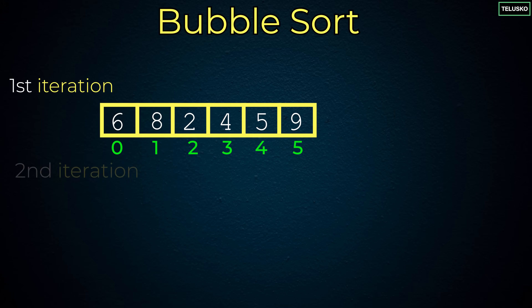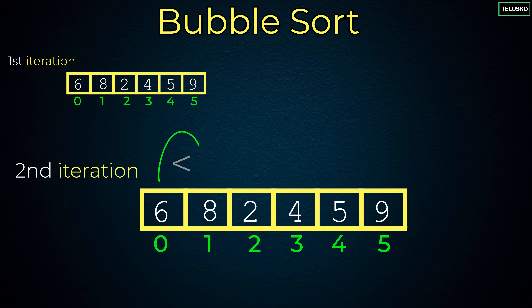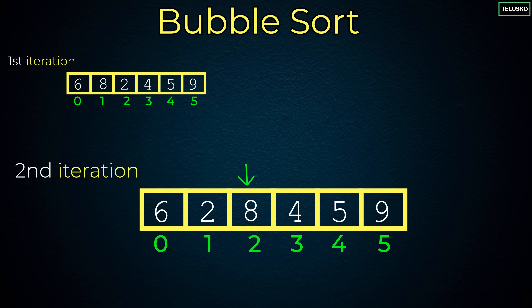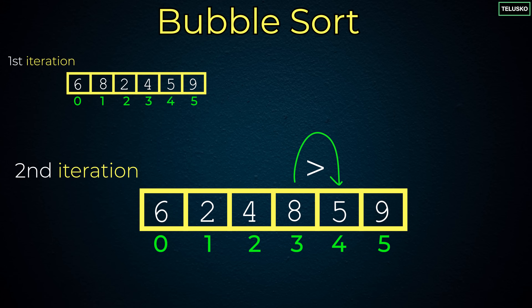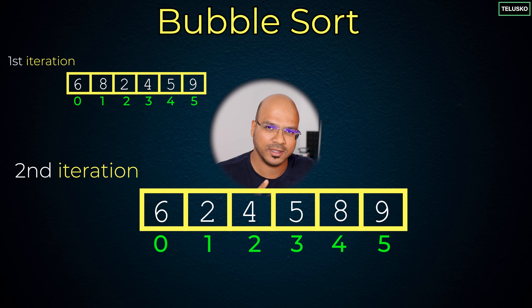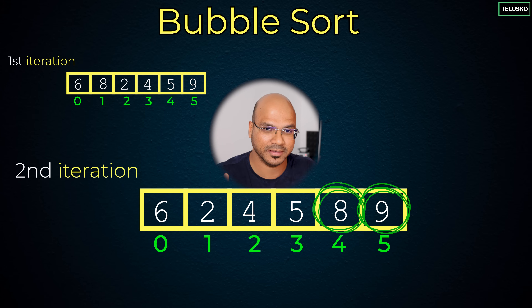You repeat the same steps: compare the first two values — no swap needed, skip. Next two values: first is greater than second, swap. Then 8 and 4 — 8 is greater than 4, swap. Then 8 and 5 — 8 is greater than 5, swap. After two iterations, you got the two biggest values — 8 and 9 — at the end, confirmed sorted.